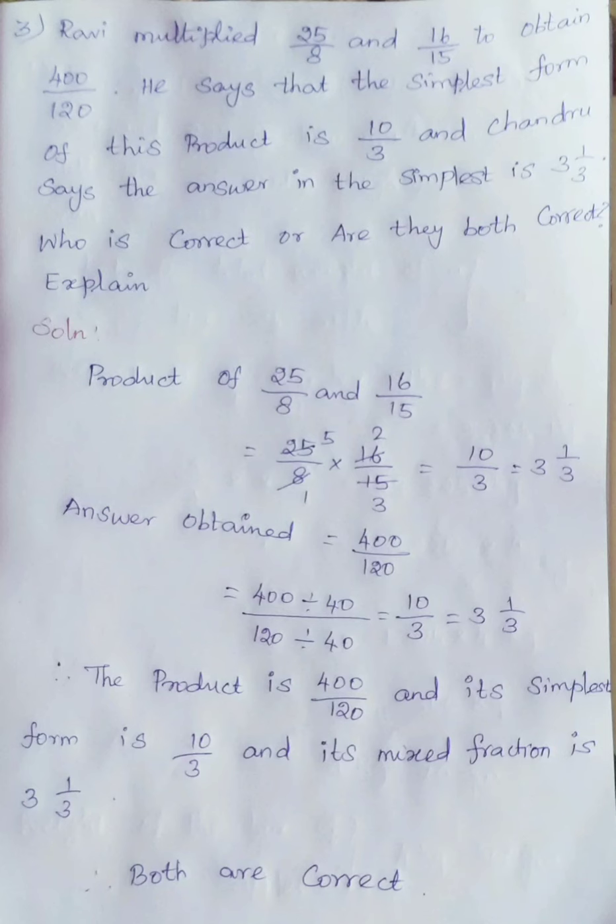Therefore, both answers are correct. Simplest form of 400 by 120 is 10 by 3 and 3 into 1 by 3. Both are correct. So, Ravi told the simplest form of improper fraction and Chandru told the mixed fraction. Both are correct.